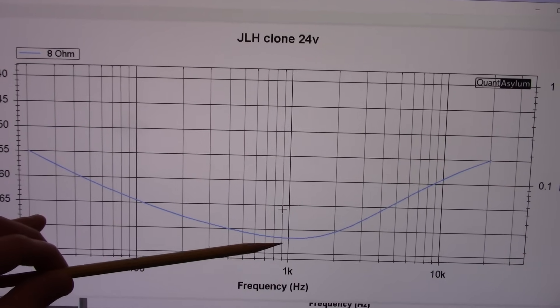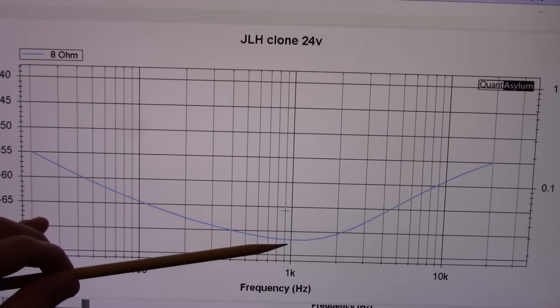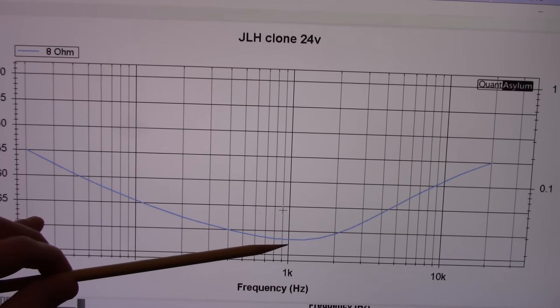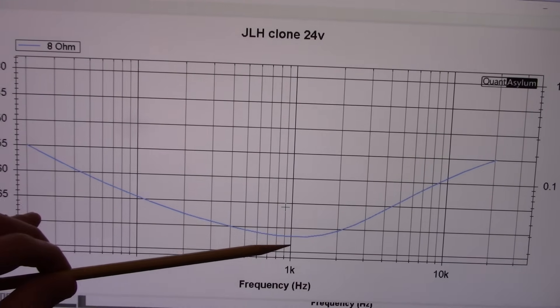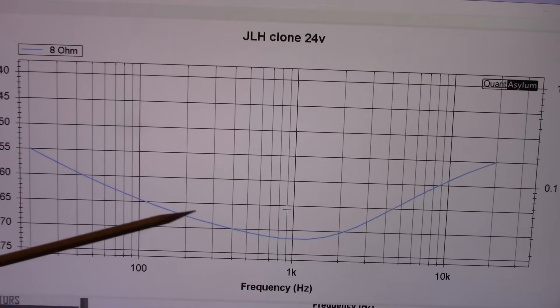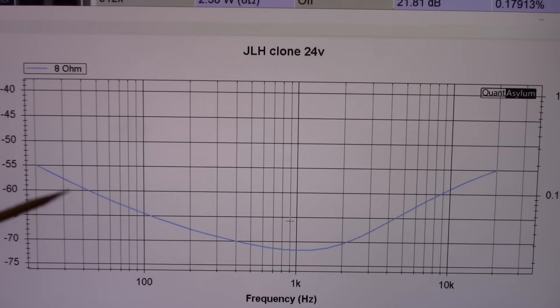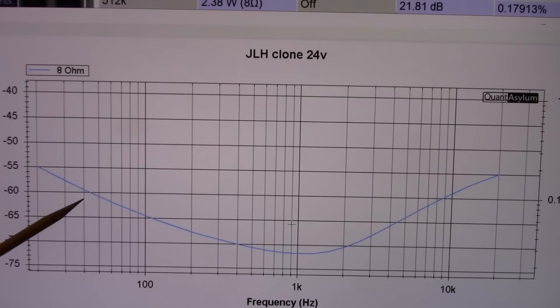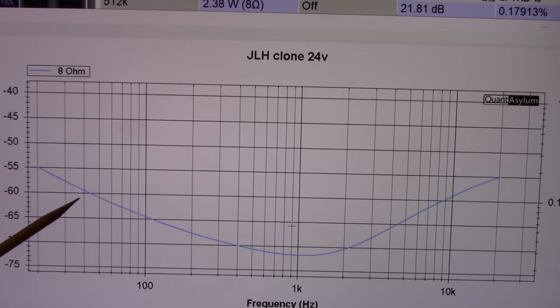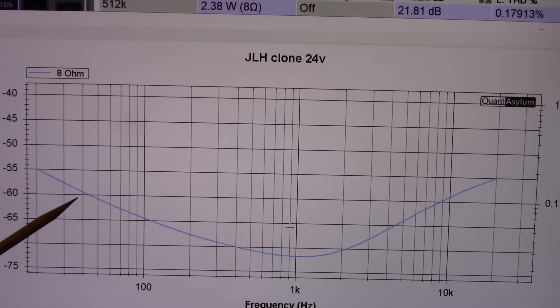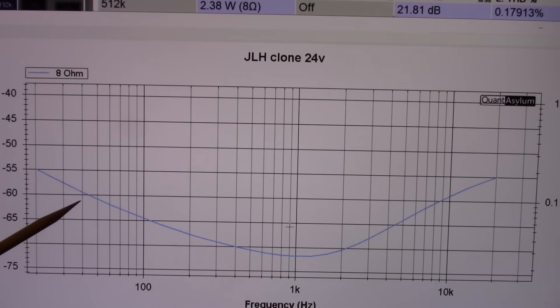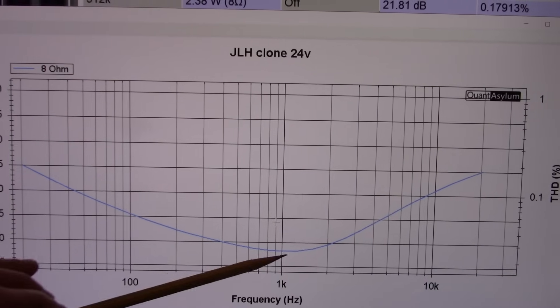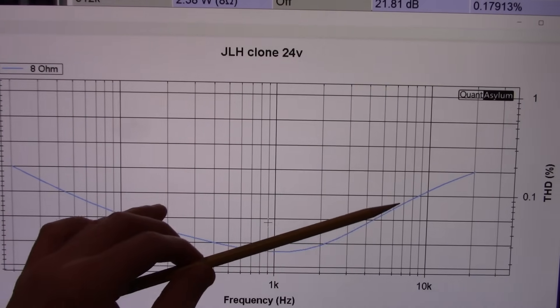Frequency versus distortion, you can see we're getting those low numbers right around the one kilohertz range which you know that's the best point to go for the lowest numbers because that's where your hearing is going to be most sensitive to the harmonics. But at lower frequencies you're seeing that rise and you know that's pretty typical of a capacitive coupled output of the amplifier because as the voltage on the plates of the capacitor increase you get more distortion from those electrolytic capacitors.